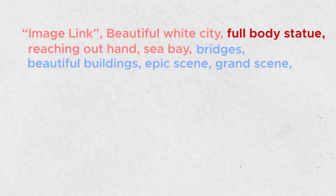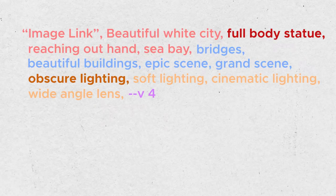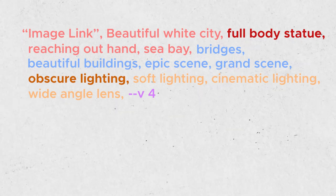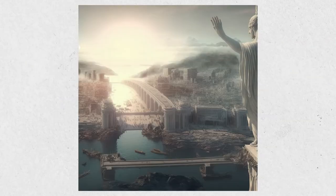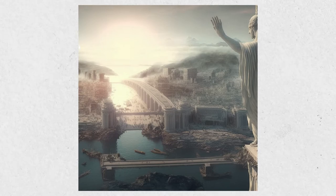I like the second one, but the lighting is too strong and I want to see more of the statue. Once again, I'll modify the prompt using the remix function: Full body statue, obscured lighting. I'll stop here, but you can keep going, adding and removing details as you want. You get the idea by now.